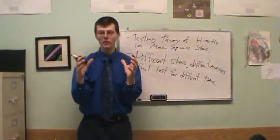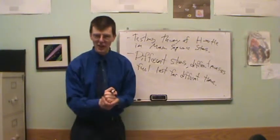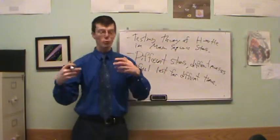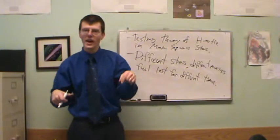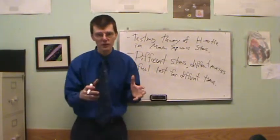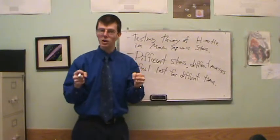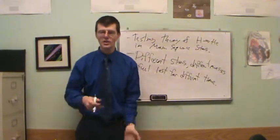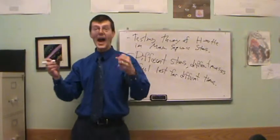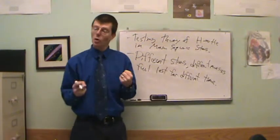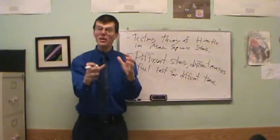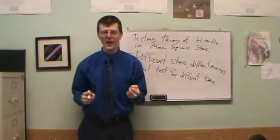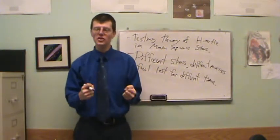You might think a star with twice the mass of the Sun has double the fuel and should last twice as long — but it doesn't. That star with double the mass has a much higher luminosity than the Sun. Luminosity tells you the rate of nuclear fusion. If luminosity is more than double, the star burns through its fuel far faster, even though it has twice as much.